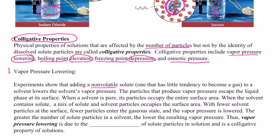So when I add a non-volatile solute — like sugar or table salt — to water, my pure solvent, the vapor pressure of my water will be lowered. The particles that produce vapor pressure escape the liquid at its surface. When a solvent is pure, its particles occupy the entire surface area. When the solvent contains a solute, we now have a mix of solute and solvent particles at the surface, with fewer solvent particles there.